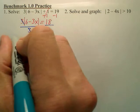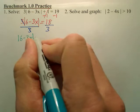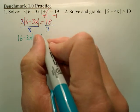So, I now have the absolute value completely by itself, and that's what we're looking for. 18 divided by 3 is 6.